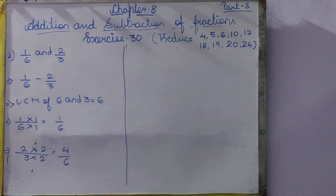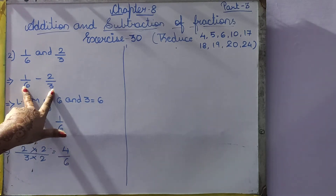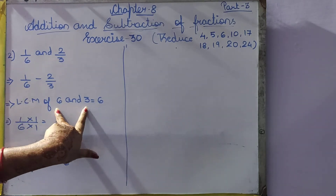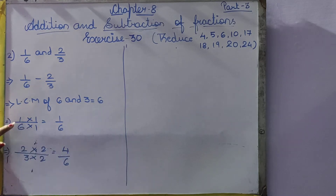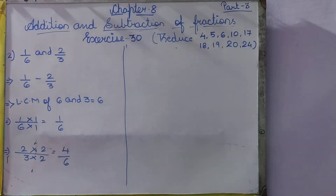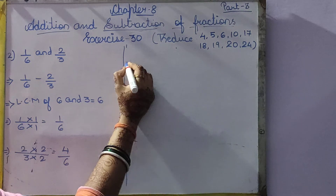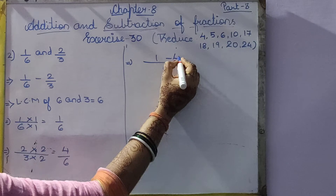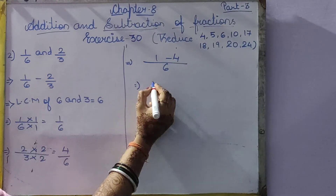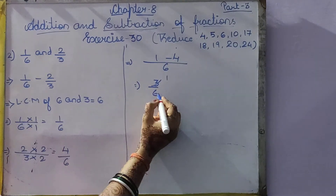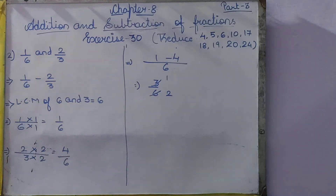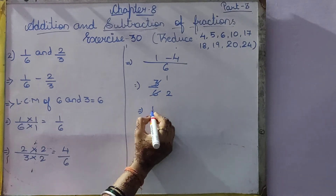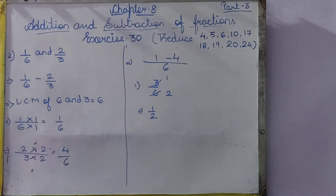Second question: 1 by 6 minus 2 by 3. So 6 and 3 are both different. We take out the LCM of 6 and 3, which will be 6. So 1 by 6: 6 1's are 6. For 2 by 3: 3 2's are 6. So the common denominator is 6. Now 1 minus 4 — when we separate these two numbers we get 3 by 6, where 3 1's are 3 and 3 2's are 6. So the answer is 1 by 2.